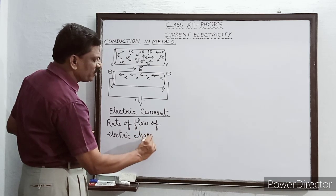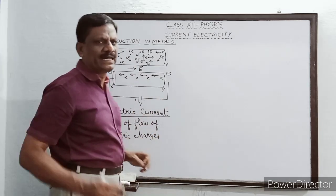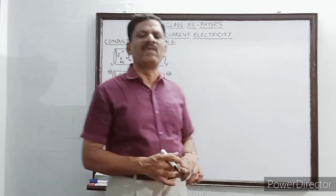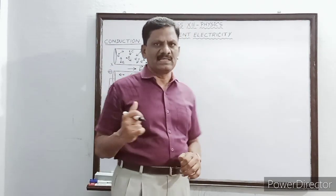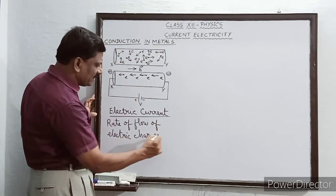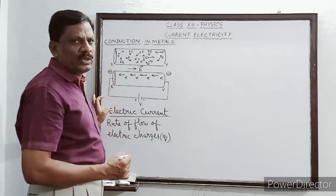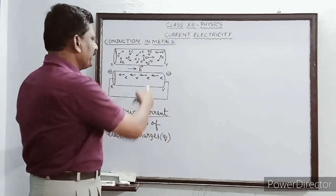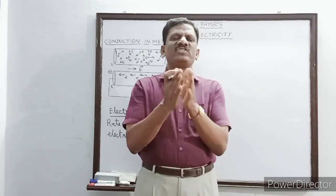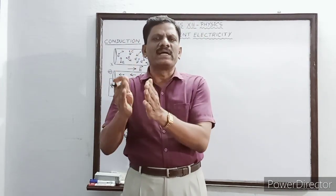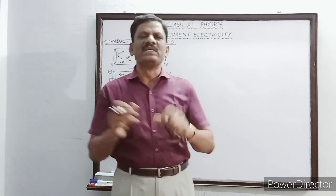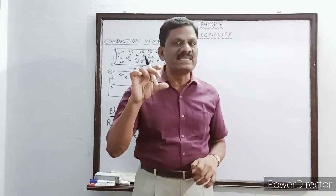What type of charges are flowing through a metallic conductor? They are the electrons — electrons are responsible for the flow of current through conductors. This quantity of electric charge is always represented with the symbol Q. Sometimes, equal quantities of charges will pass through the cross section of the conductor in equal intervals of time.